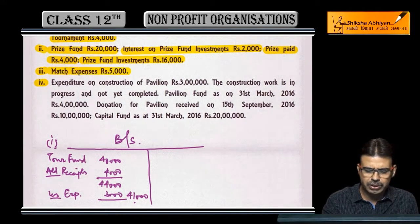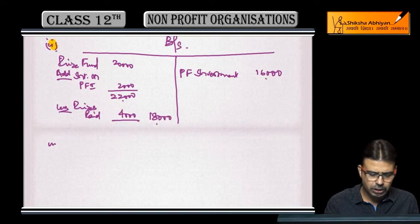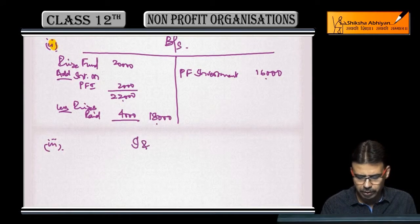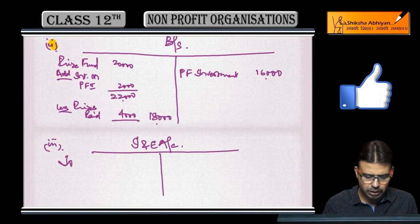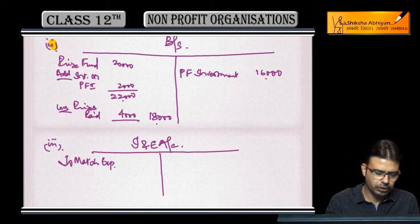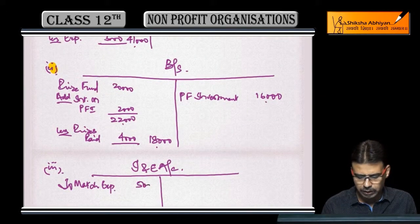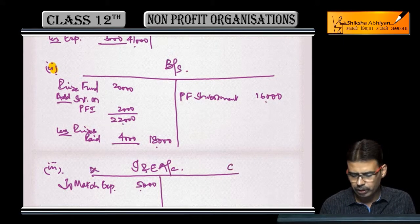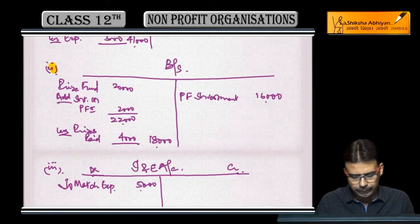Point number three: match expenses — simple match expenses diya hua hai, aapke saamne koi match fund nahi hai. Toh yeh general ho jaati hai. Isko hum log simple income and expenditure account mein dikhayenge, aur uske debit side par show hoga. Match expenses — amount 5,000 — debit side par expenditure show hoga. Agar koi income hoti toh credit side par show hoti. Lekin is related koi fund nahi hai, isliye hum isko liability side par nahi dikha sakte.